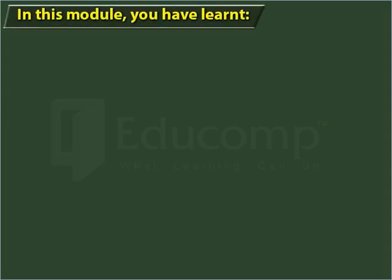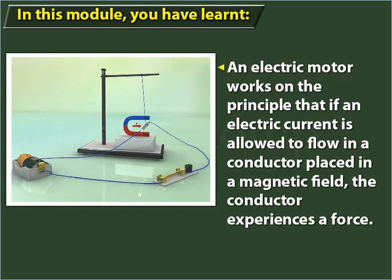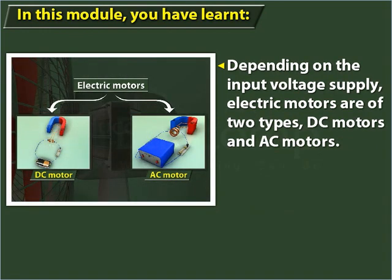In this module you have learnt: an electric motor is an electrical device that converts electrical energy to mechanical energy. An electric motor works on the principle that if an electric current is allowed to flow in a conductor placed in a magnetic field, the conductor experiences a force. Depending on the input voltage supply, electric motors are of two types: DC motors and AC motors.